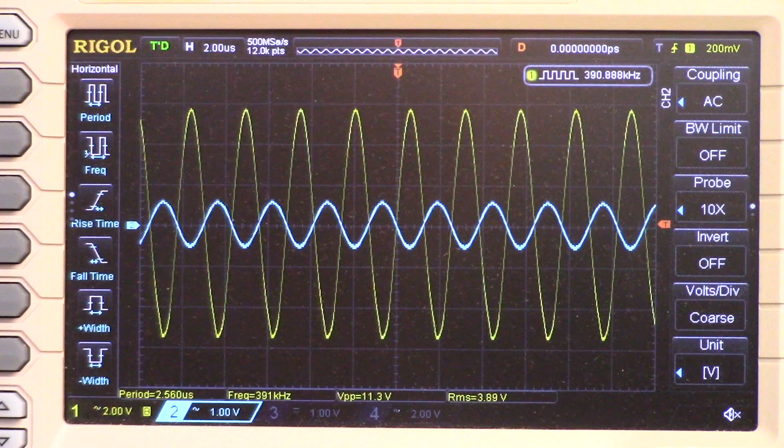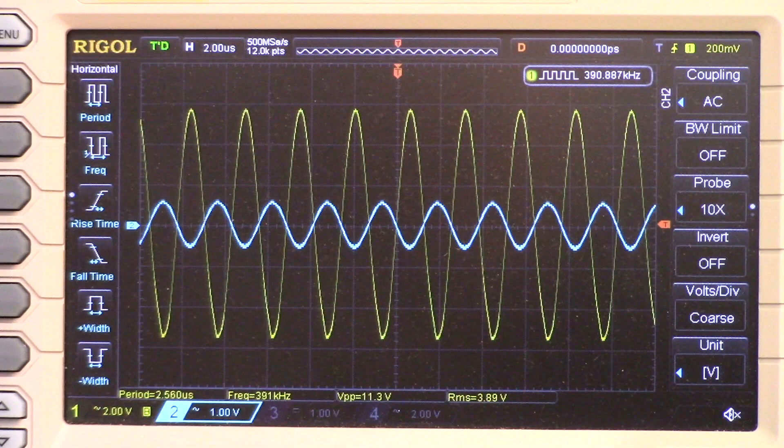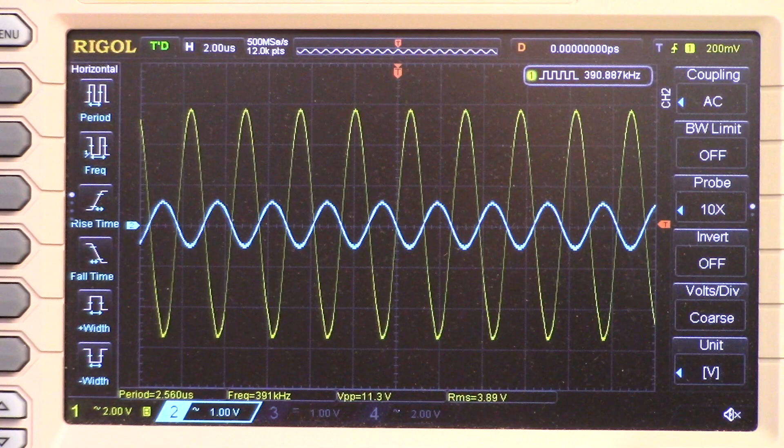And the yellow trace is what you get at the output of the oscillator. Now these scales here are different. The blue trace is 1 volt per division, and the yellow trace is 2 volts per division. So you can really see the pronounced effect of the amplifier.